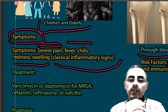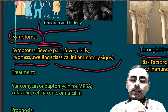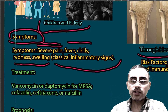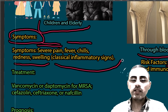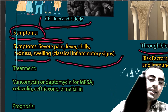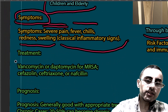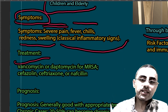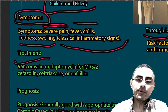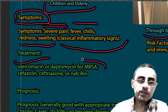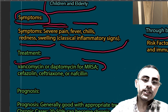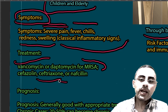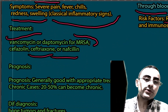Osteomyelitis is diagnosed by patient history and imaging such as X-ray and CT scan. For definitive diagnosis, the gold standard is biopsy. Treatment involves antibiotics such as vancomycin and daptomycin for methicillin-resistant Staphylococcus aureus, while cefazolin, ceftriaxone, and nafcillin are also used.